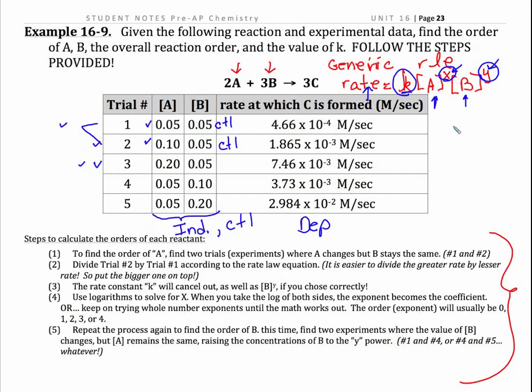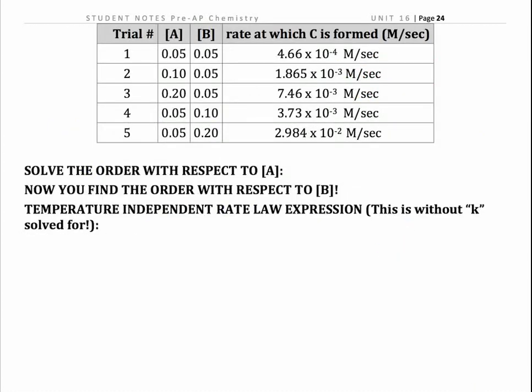So we're going to compare two of these trials. We could do one to two, we could do one to three, or two to three. Any one of those work to find the order with respect to A. So we want A to be our independent variable. Now I'm going to pick two and one. Let's go on to the next page and I'll show you what we do with these. So let's highlight that. We're going to do trials one and two and our goal is to find the order with respect to A. So that's what we're doing right now.